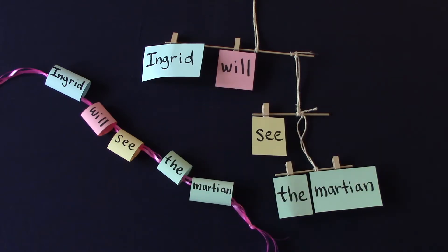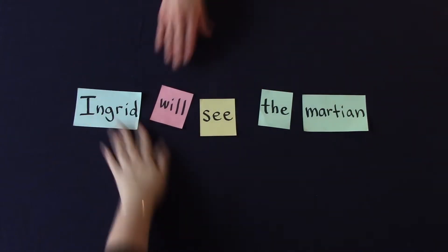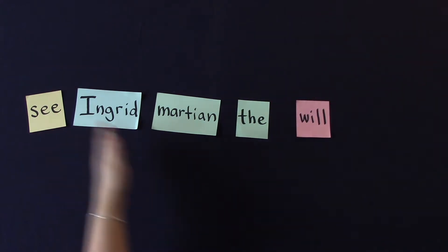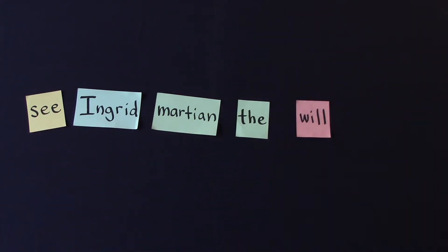But what about the words in a sentence? It's pretty clear that the order is important somehow. After all, if you scramble the words around, you don't necessarily get a good sentence. Just like yellow, blue, green, green, red is a different bracelet pattern.